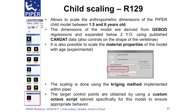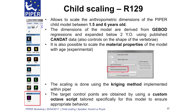First, I'm going to say a few words about how it's done. There is a module in the custom menu that you can see on the left, where you have a box to scale the child. It allows scaling the anthropometric dimensions of the Piper child model between 1.4 years old and 6 years old. For ages between 2 and 6 years old, the data are derived from the J-Bud regression. These data are expanded to 1.5 years old from the published Candid data. There are also control points on the shape on the vertebrae to control the shape.